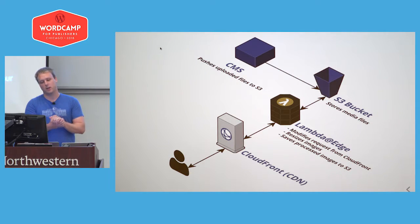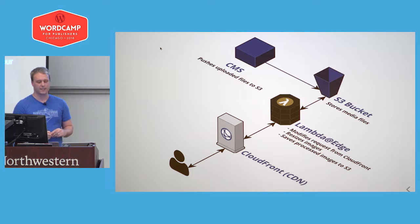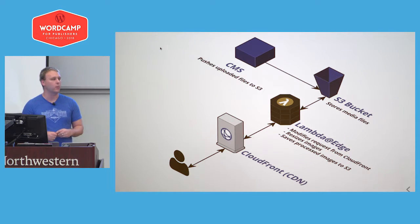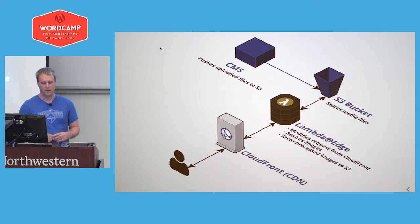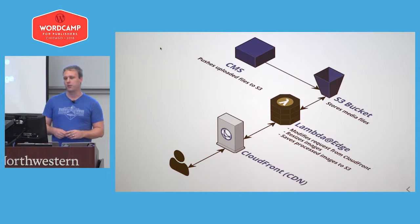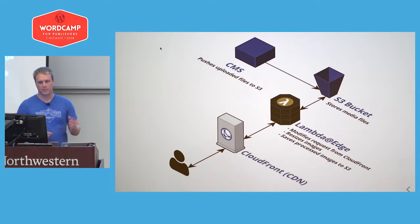Here's a brief overview of how it works. Our WordPress CMS uploads all media to an S3 bucket, so all our images live in one place. When a user accesses an image, it hits our CloudFront CDN, and from there, using Lambda at Edge — which sits on the edge of the CDN — we can make decisions on what to do with that request. We can resize the image, check if there's a cached version of the resized image, and then serve the request appropriately.